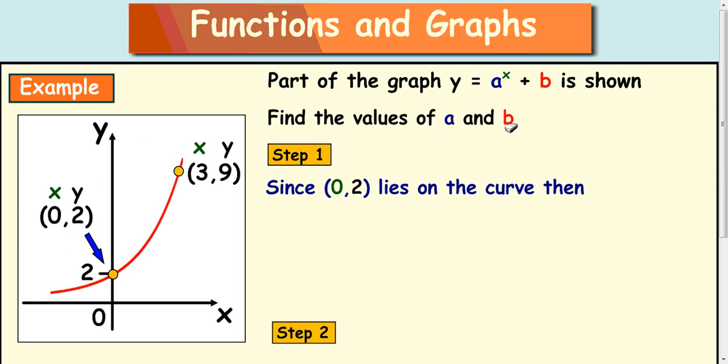Now the way to do this is a two step question. Always use this coordinate first. Use your x and your y values and substitute them in up here. So x in this coordinate is 0 and y is 2. So you substitute 2 in here and 0 up here.